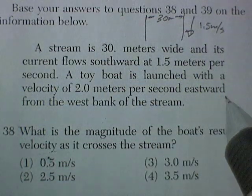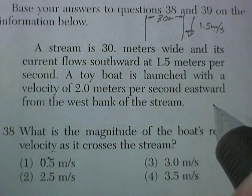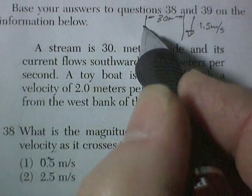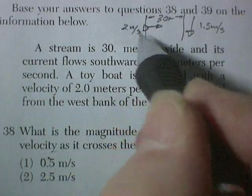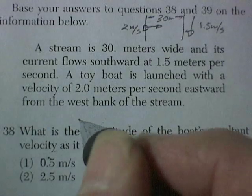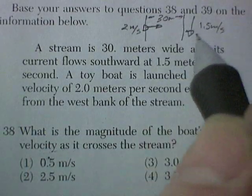A toy boat is launched with a velocity of 2 meters per second eastward. So the boat is heading that way at 2 meters per second. And from the west bank. So it's got to cross the river.